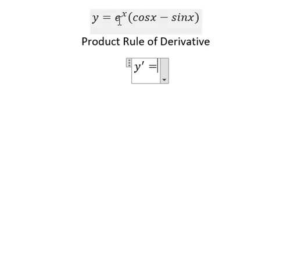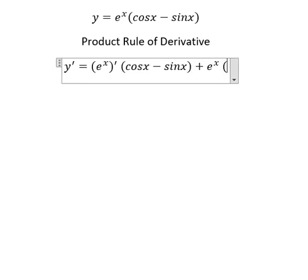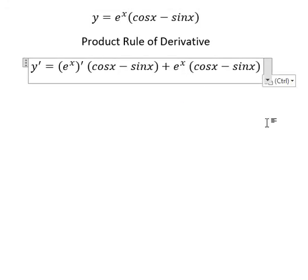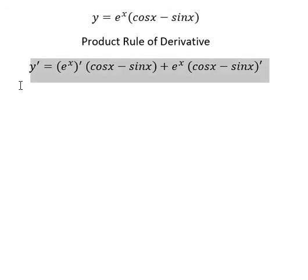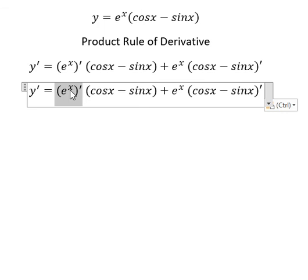We need to find first derivative of e to the power of s, multiply by cosine s minus sine s, plus e to the power of s, and we do first derivative of cosine s minus sine s. Now we can get the final answer. This one, you got e to the power of s.